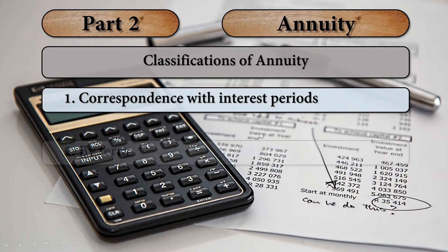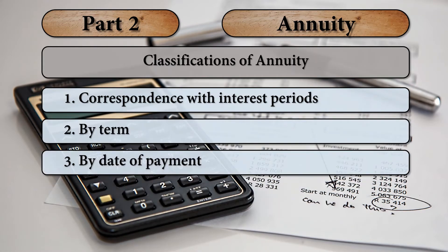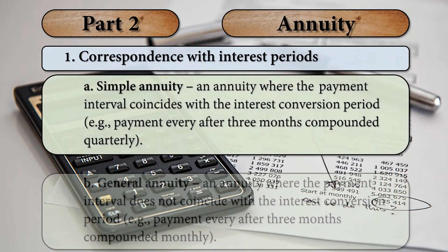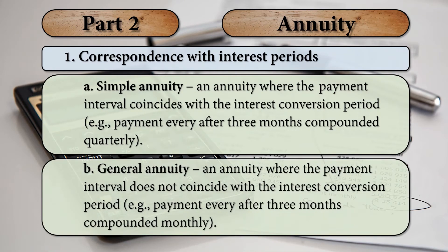As discussed during our synchronous class, there are three classifications of annuity: the first is by correspondence with interest periods, the second one is by term, and the third one is by date of payment. Under the first one, correspondence with interest periods, there are two types: the simple annuity and the general annuity.